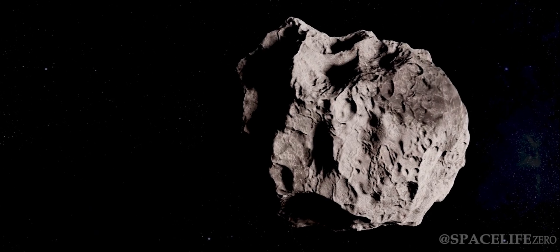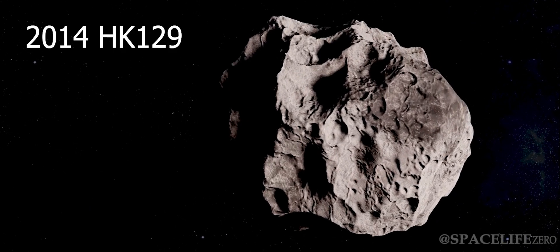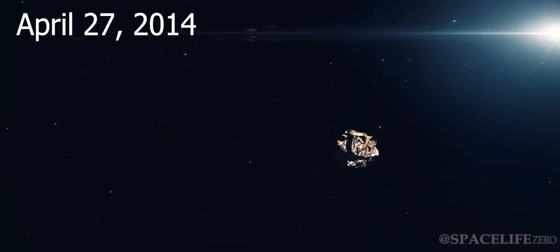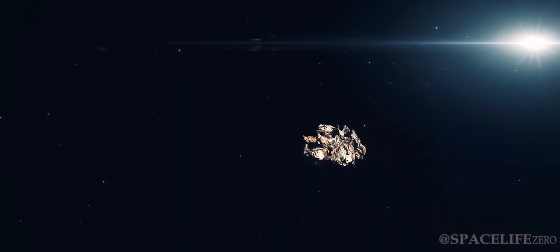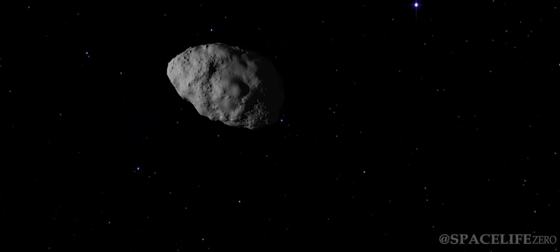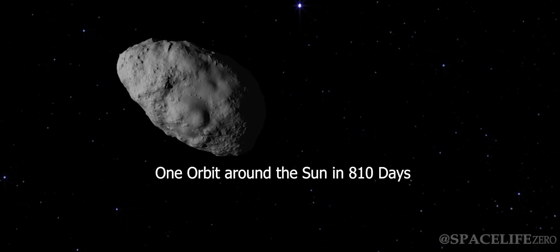This massive asteroid is designated as Asteroid 2014 HK129. It was discovered on April 27, 2014, and it belongs to the Apollo Group. It makes one orbit around the Sun in 810 days.